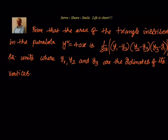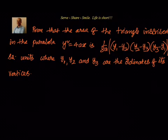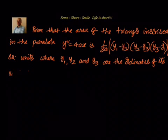Hello friends, welcome back, hearty welcome to you. Let's look at this problem related to parabola conic sections. Prove that the area of the triangle inscribed in the parabola y squared equal to 4ax is equal to 1 by 8a multiplied by the absolute value of y1 minus y2 into y2 minus y3 into y3 minus y1 square units, where y1, y2 and y3 are the ordinates of its vertices.